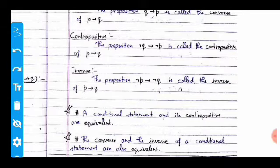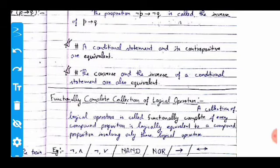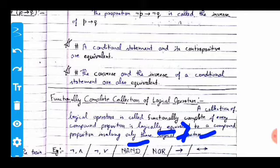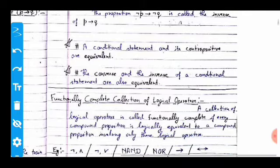Now we move on to the concept of a functionally complete collection of logical operators. A collection of logical operators is called functionally complete if every compound proposition is logically equivalent to a compound proposition involving only those operators — such as negation, conjunction, disjunction, NAND, NOR, conditional, and biconditional.